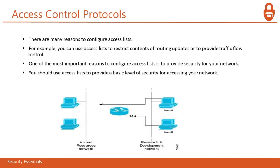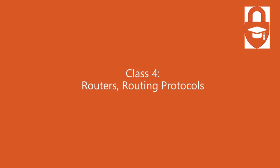Finally, we have access control protocols. There are many reasons to configure an access list — for example, restricting the contents of routing updates or providing traffic flow control. One of the most important reasons is to provide security for your network. Access lists provide a basic level of security, essentially determining who has permission to access the network and who doesn't. It is a complete list of all IP addresses that have access and those that do not, and it can block external IPs that are not on the permitted list.